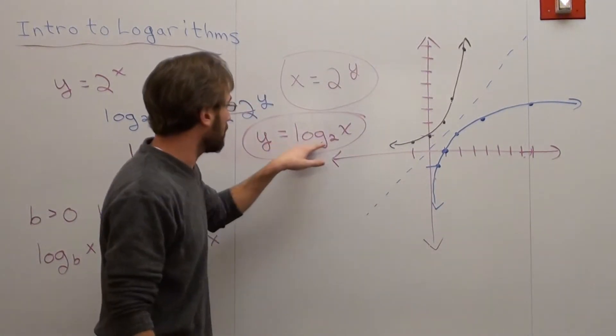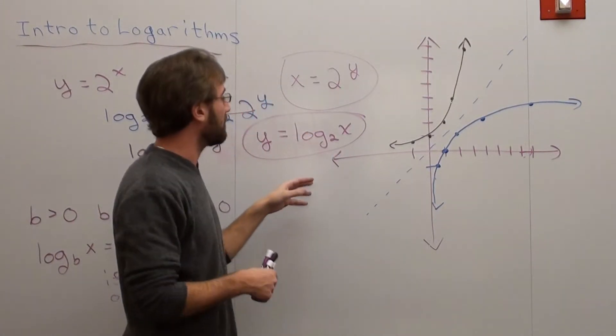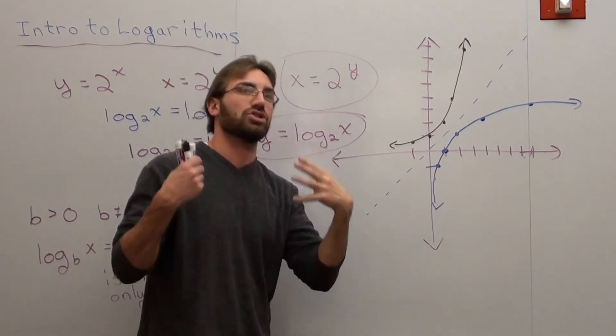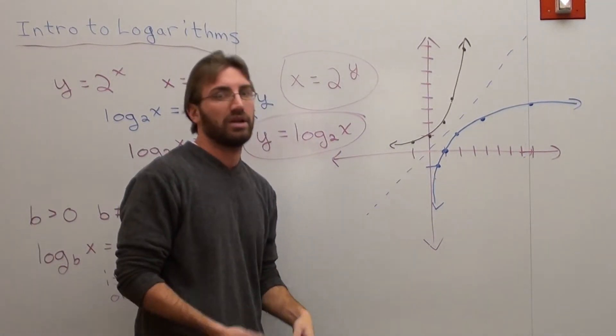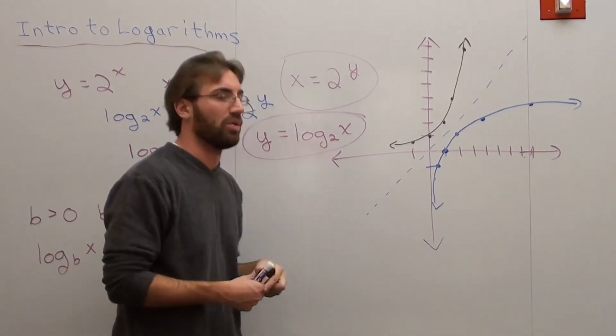So y equals log base 2 of x, x equals 2 to the y. It should be said this, that you're going to get problems once in a while that won't say this little number here. And if it doesn't, it's assumed that the number is 10. It's a log base 10 function. If it does have a number here, that's the base that we're working with.